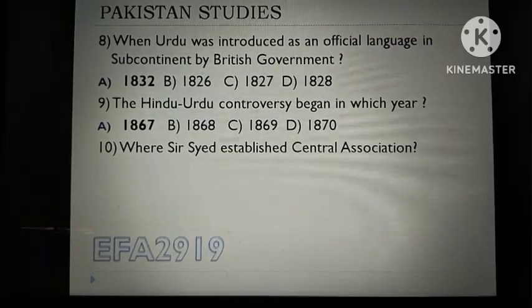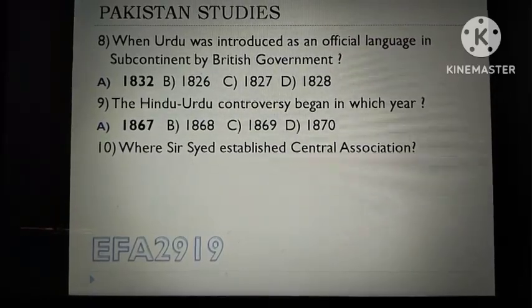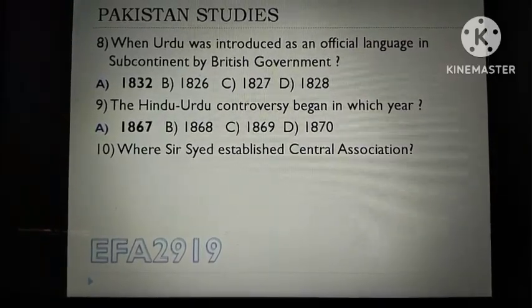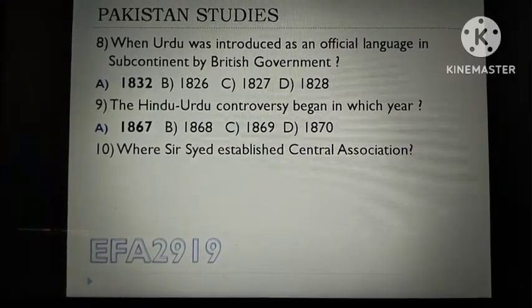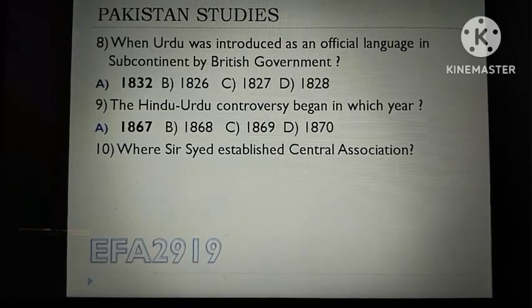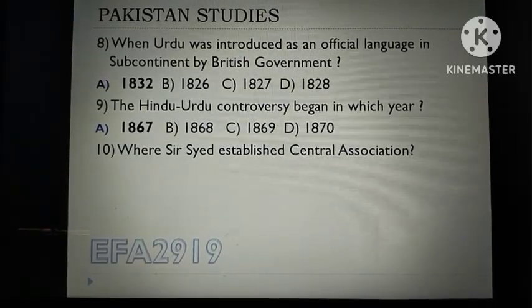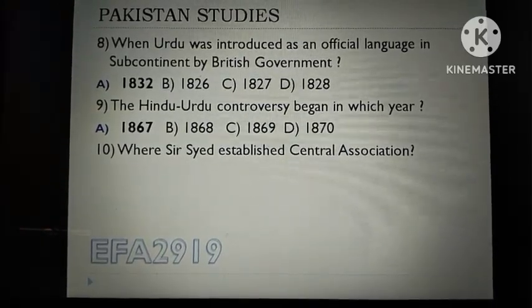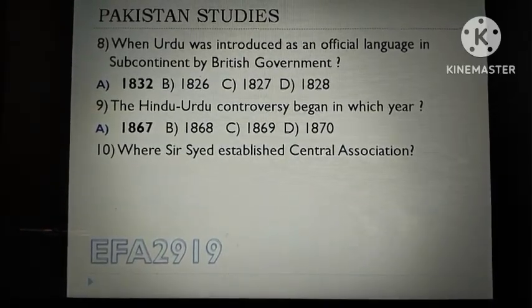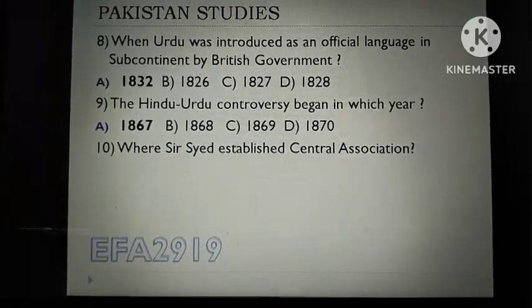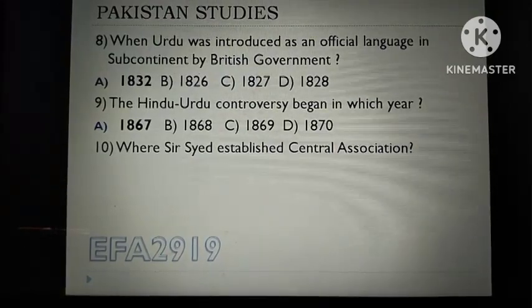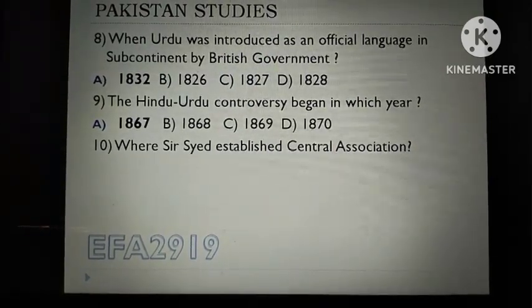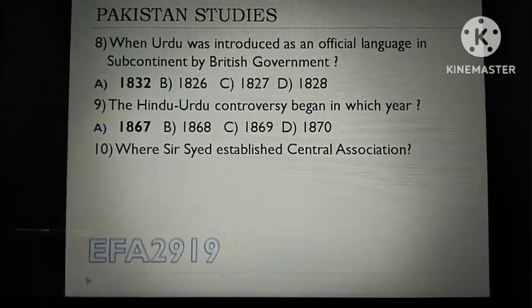The Hindu-Urdu controversy began in which year? 1867, 1868, 1869, or 1870? 1867 is the correct answer.